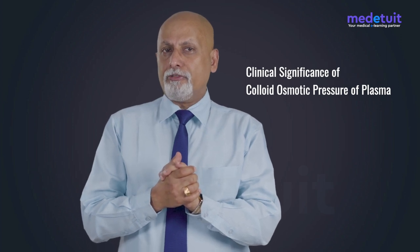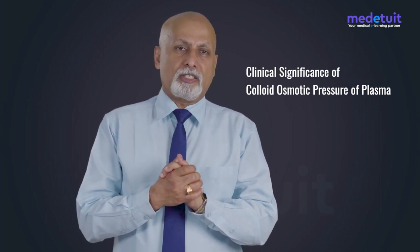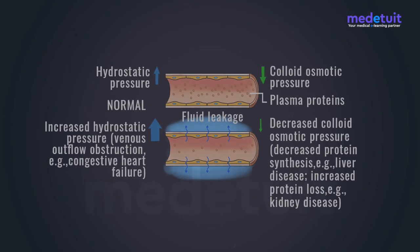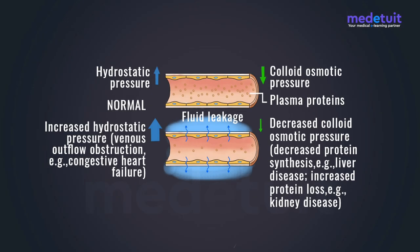Now let us see the clinical significance of colloid osmotic pressure of plasma. Consider a segment of capillary as shown in this frame. Plasma is enriched with plasma proteins, and the maximum concentration is exerted by albumin, making albumin responsible for the maximum colloid osmotic pressure. At the capillary level, there are two sets of pressures operating: an inward pressure exerted by the colloid particles in the plasma (plasma proteins), and an outward pressure exerted by the fluid element of plasma. These two pressures act opposite to each other.